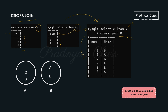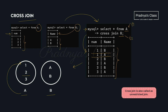Look at the output — this is the cartesian product of the records. Table A's first record combines with both records of table B, giving us content one-A and one-B. In the same way, the second record combines with both records of table B, and the third record also combines with both. Table A has three records and table B has two, so we get a total of six records.